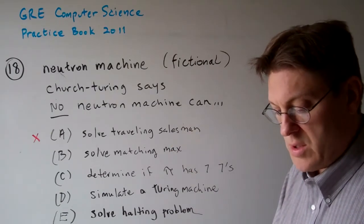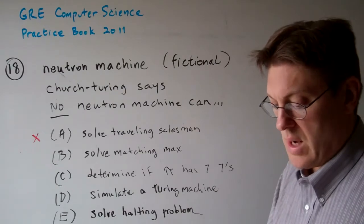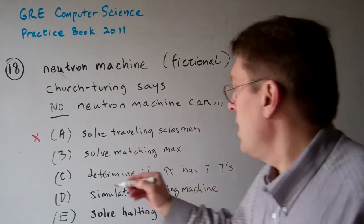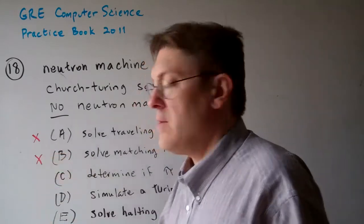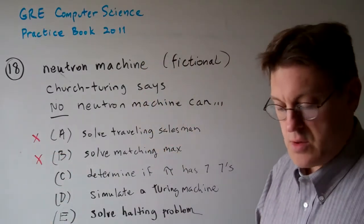Option B: No neutron machine can solve the maximum matching problem for bipartite graphs in polynomial time. Again, this is not something that is a result of Church-Turing.